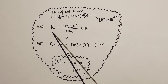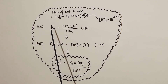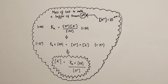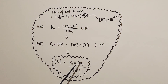Starting from Ka = H+ × A- ÷ HA, we multiply both sides by [HA] to get Ka × HA = H+ × A-. Then we divide both sides by the known hydrogen ion concentration, leaving A- = Ka × [HA] ÷ [H+]. Once we have the concentration of A-, we can work out what mass of salt that conjugate base concentration was generated by.